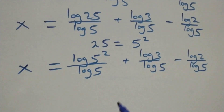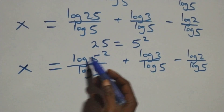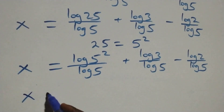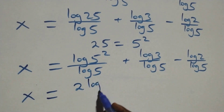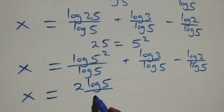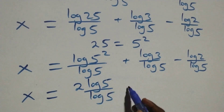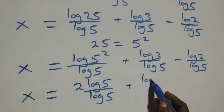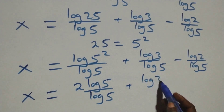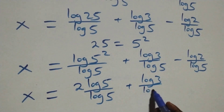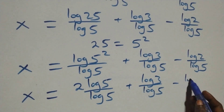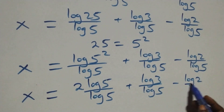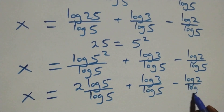Here we apply the power rule of logarithm: the 2 comes down. So we have x equals 2·log 5 over log 5, plus log 3 over log 5, minus log 2 over log 5.